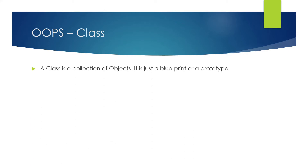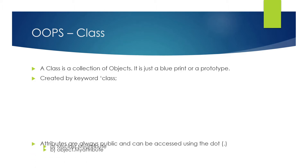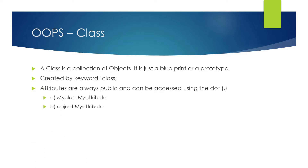So what exactly is a class? A class is a collection of objects — it is just a blueprint or a prototype. It is created by the keyword 'class' and it has some attributes inside it. These attributes are always public and can be accessed using the dot operator. You can access it through the class name dot attribute — for example, if your class is 'dog' and its attribute is 'height', you write dog.height.